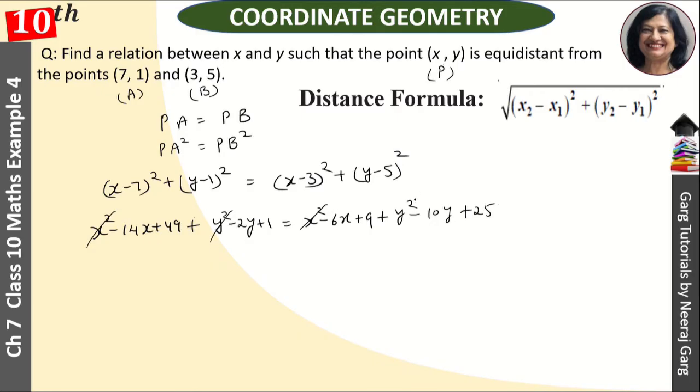x² cancels with x², y² cancels with y². We have -14x and +6x, which gives -8x. We have -2y and +10y, which gives +8y.